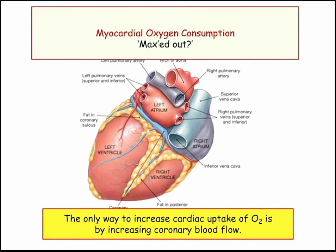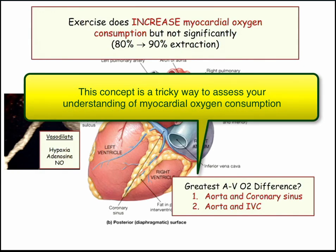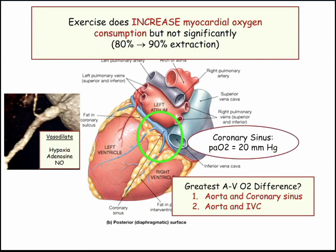Myocardial oxygen consumption is maxed out — we're already extracting most of the oxygen we can through our coronary vessels. We get 80% at baseline; when we exercise, we kick that up to 90%. If they ask what's going on with myocardial oxygen consumption, it does go up, and the only way to keep up with oxygen demands is increased coronary blood flow. Regarding the AvO2 difference: is the biggest difference between the aorta and the coronary sinus, or the aorta and the IVC? It's the coronary sinus — those vessels are extracting more oxygen, so the PaO2 at the coronary sinus is only 20.